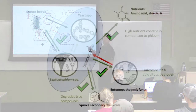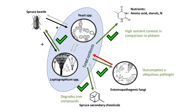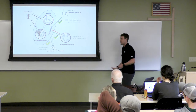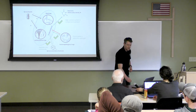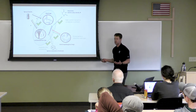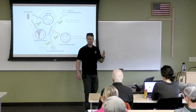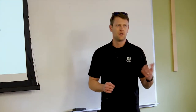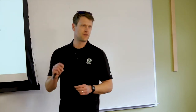Looking back at our interaction figure, the fungus is fairly nutritious compared to tree phloem, does a good job of out-competing a ubiquitous pathogen, and does a good job of degrading chemicals present in spruce phloem. I'm going to conclude that this is probably a mutualistic relationship benefiting the insect. We have a couple of smoking-gun experiments planned for this summer to formally demonstrate that association with the fungus increases beetle reproductive rate — working with Javier Mercado from the RMRS.